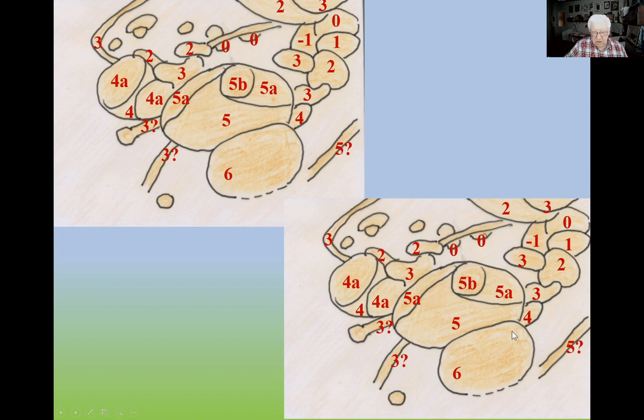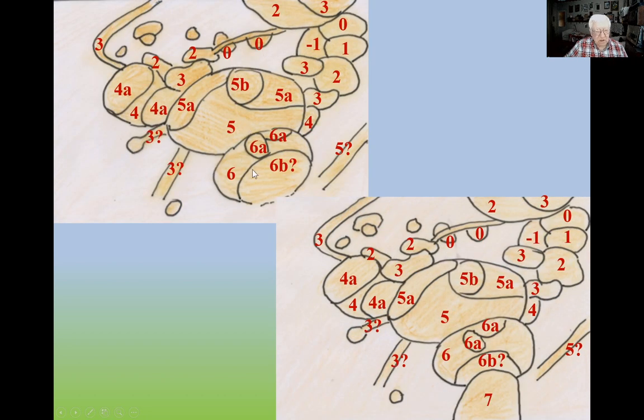And appear objects number six, next generation, younger, much younger than all these. And at this object six are dug smaller objects, six A, two of them. This is slightly older and this is slightly younger because this six A is cutting, is crossing through the wall of object six A. And next, a younger generation of objects is six B. It's difficult to say what is the age of this object because objects six A and six B are contacting one with the other. Six B is not cutting six A. Maybe this is slightly younger, but it's not sure.